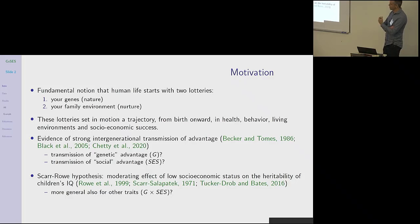There's basically this fundamental notion that human life starts with two lotteries. The first one being your genes, which you're endowed with at conception, and the second one being your family environment. And then the family socioeconomic environment is thought of as being very important. These lotteries basically set in motion a trajectory from birth onwards in health, behavior, living environments, and socioeconomic success.